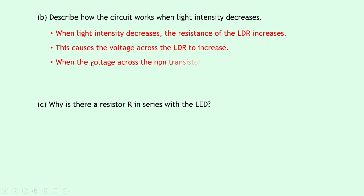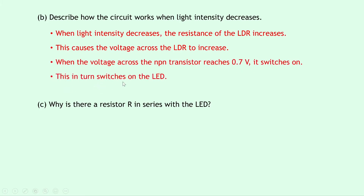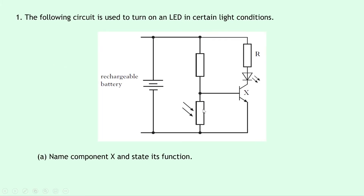Next, when the voltage across the NPN transistor reaches 0.7 volts, it switches on, and this in turn switches on the LED. To show this in the circuit diagram: as light intensity decreases, the resistance of the LDR increases, so the voltage across the LDR increases, which causes the voltage across the transistor to increase. Eventually when that reaches 0.7 volts, it switches on, which in turn switches on the LED.